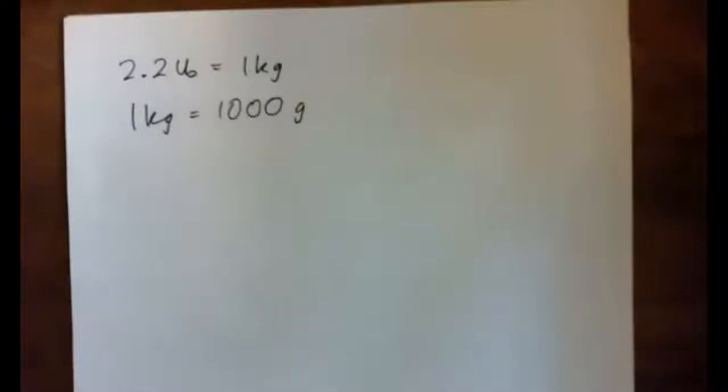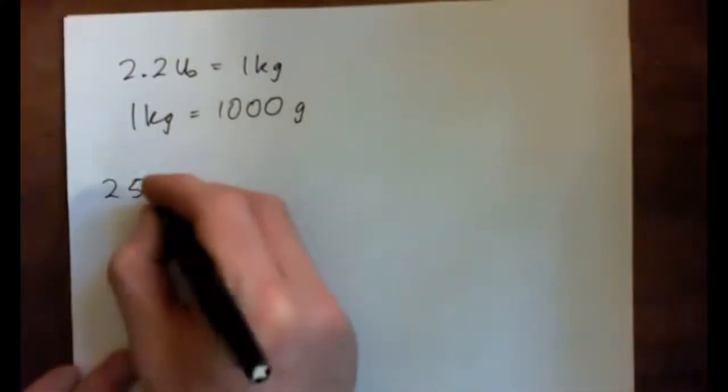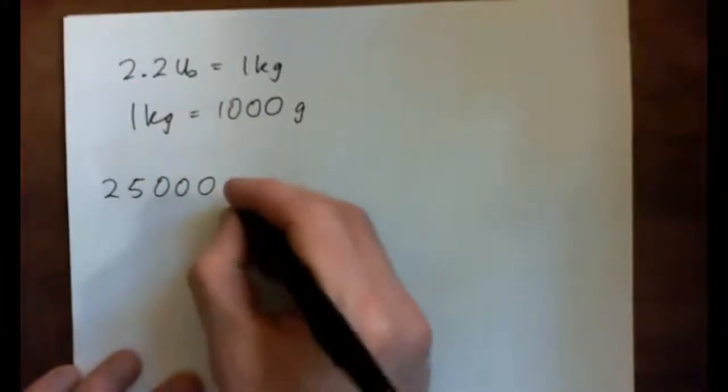Pounds are in 25,000 grams, right? Okay. So 25,000 grams, so we've got 25,000 grams.